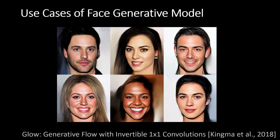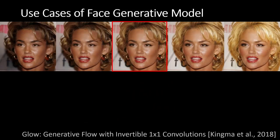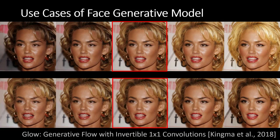Another recent technique that can generate realistic face photos is by Kingma et al. from OpenAI. What's interesting is that the model automatically discovers important attributes like hair color, how much you smile, beard, or age, and allows you to change that attribute given any image. Here's the center image — it's a real photo — and you can manipulate the hair color or make her look younger or older. These semantic attributes are discovered automatically as a byproduct of building a generative model.